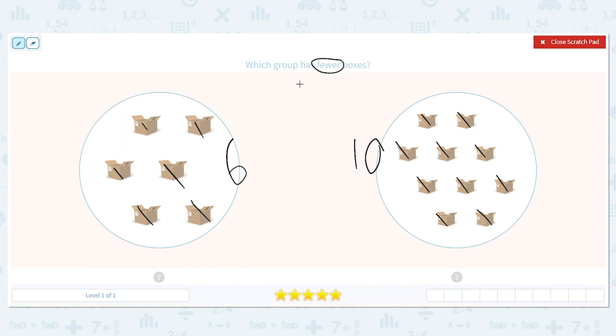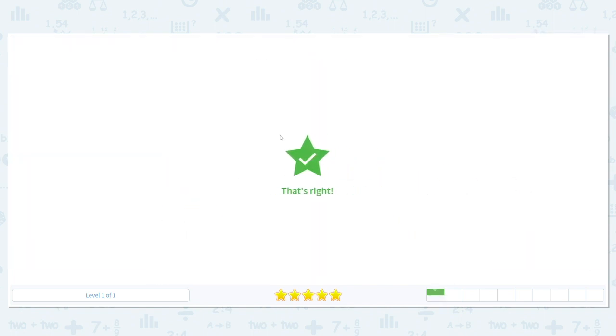So which group has fewer boxes? Which is less, six or ten? Six is less. So that means six boxes is fewer.